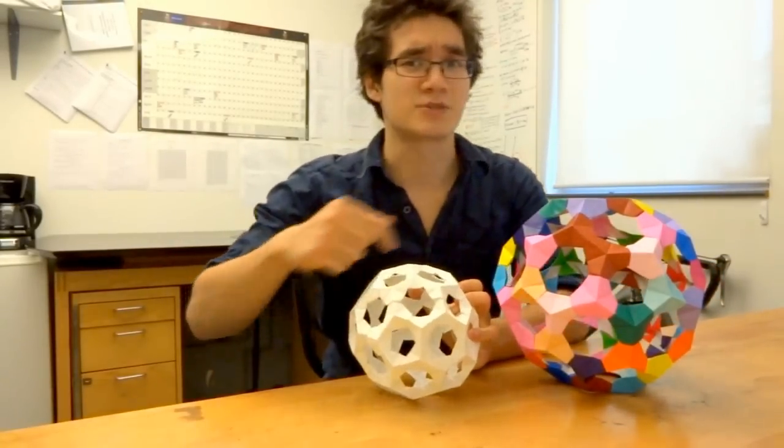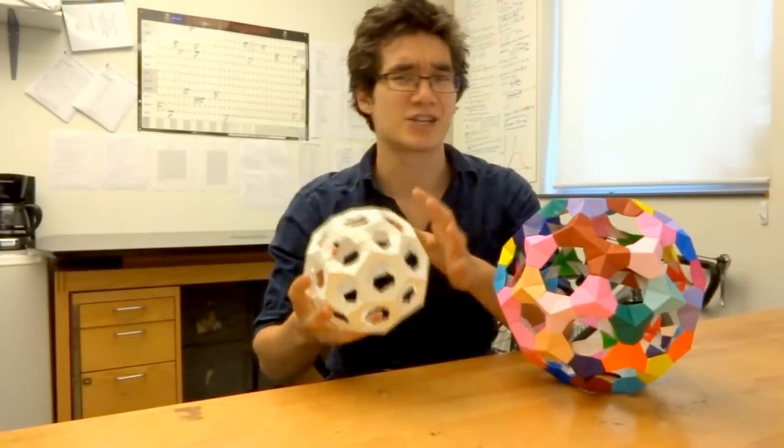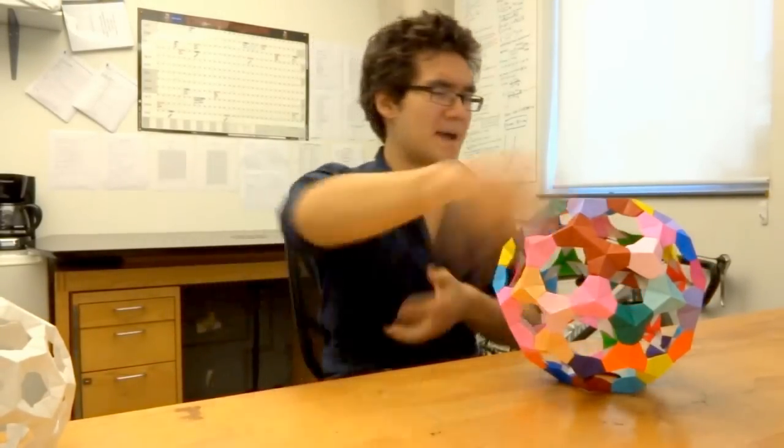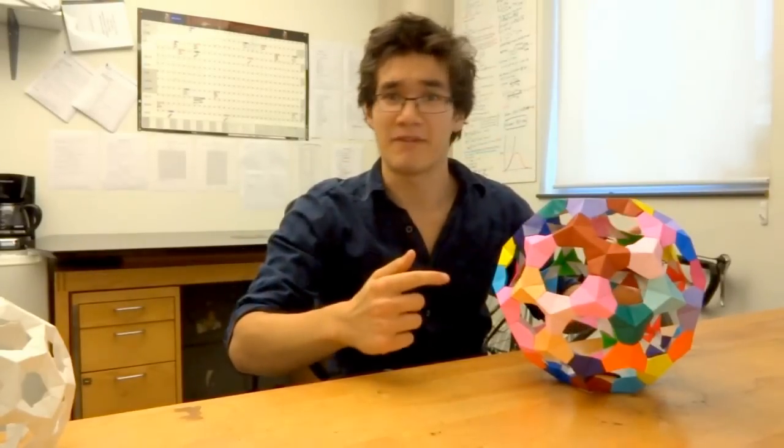That's all a Buckyball is: pentagons surrounded by hexagons in 3D space, so it looks like a sphere you can kick straight. In chemistry applications, if we took 60 carbon atoms and bound them tightly together, it would assume the shape of a Buckyball.